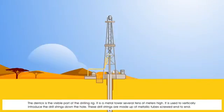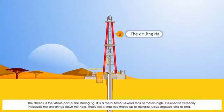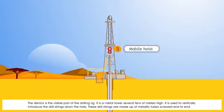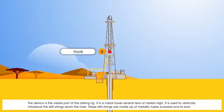The derrick is the visible part of the drilling rig. It is a metal tower several tens of meters high. It is used to vertically introduce the drill strings down the hole.